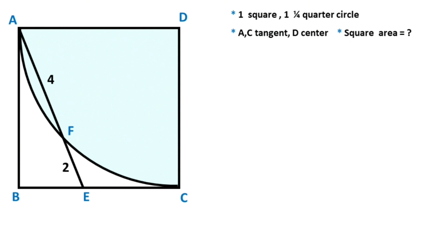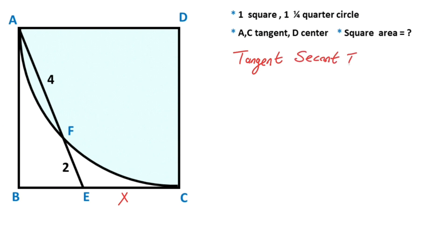The question is: what is the area of the square? For the first step, I want to represent the length of EC with x. Notice that point C is a tangent point, which means we can apply the tangent-secant theorem. Therefore, according to the tangent-secant theorem, x squared must be equal to the first part, two, times the second part, six.